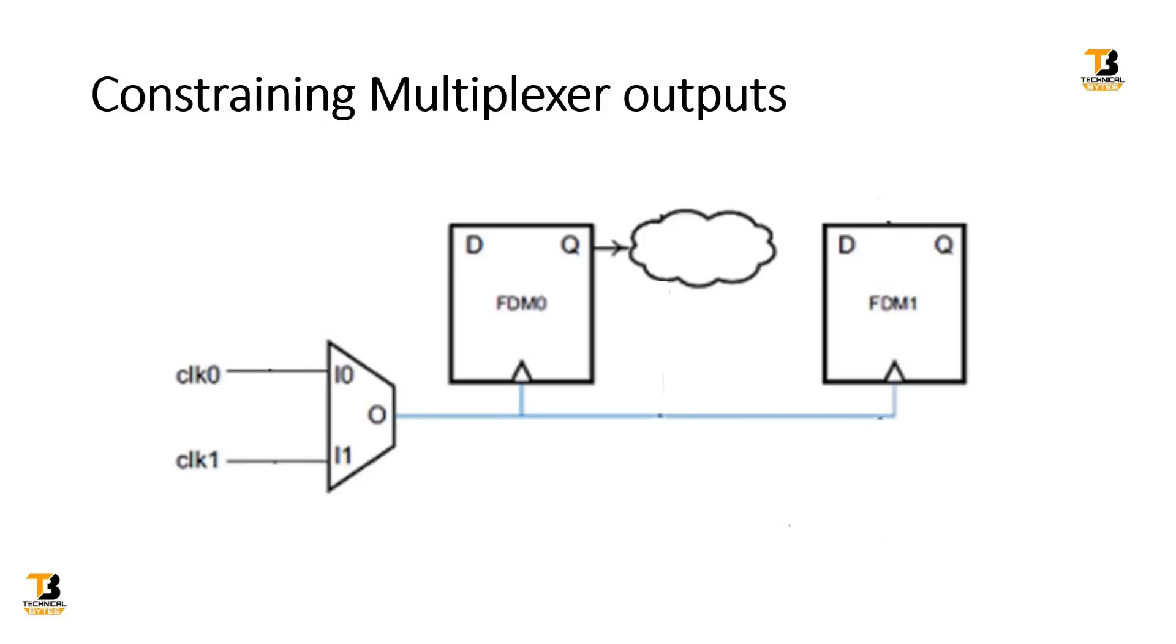The first challenge is on your screen, where we have two clock inputs: clock zero and clock one. Both go to the input of the multiplexer, and with this multiplexer we can pass only one clock at its output—either clock zero or clock one. The same clock then goes to the entire design.